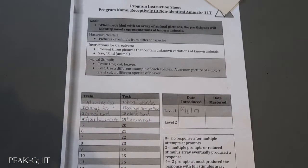So this is a quick material sample for Peak Generalization Receptively ID Non-Identical Animals 11T.